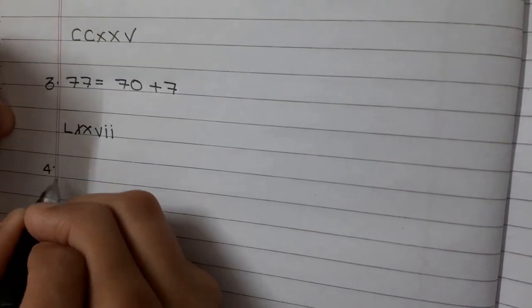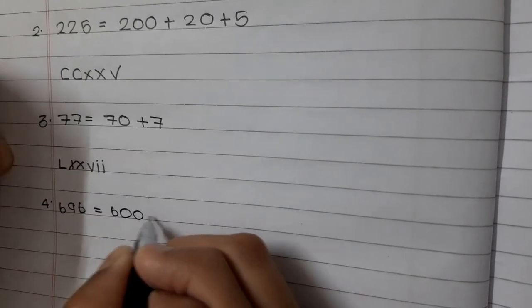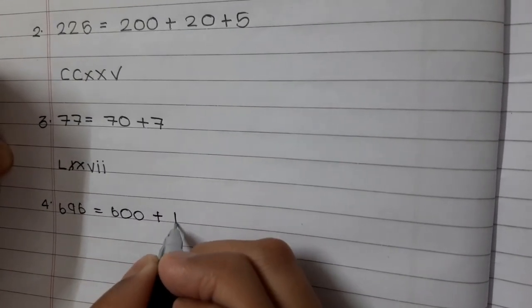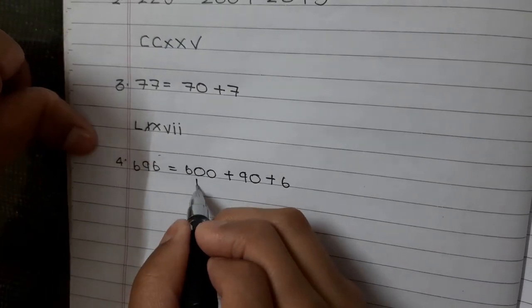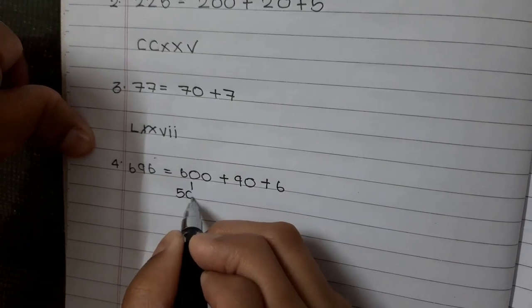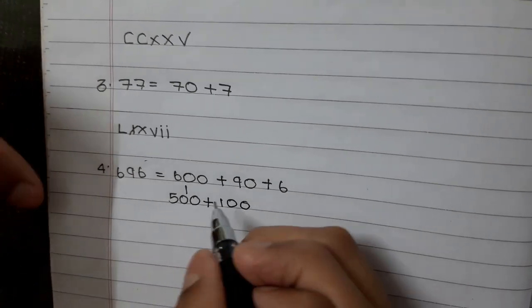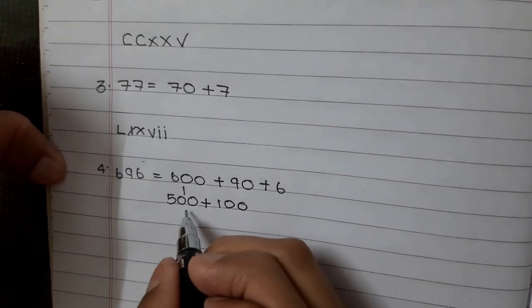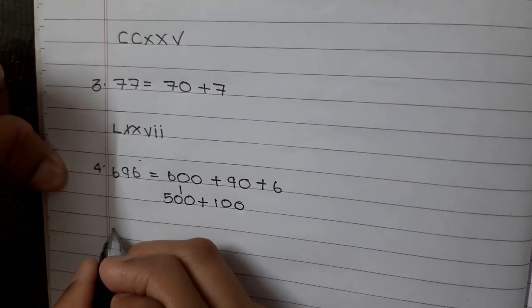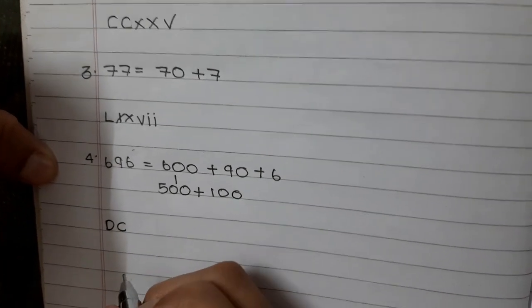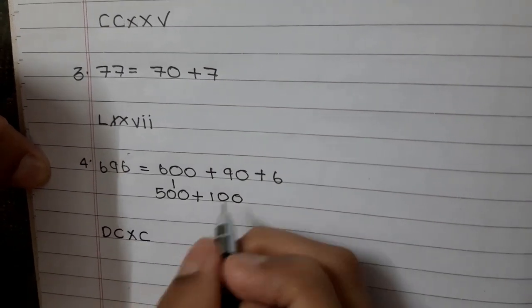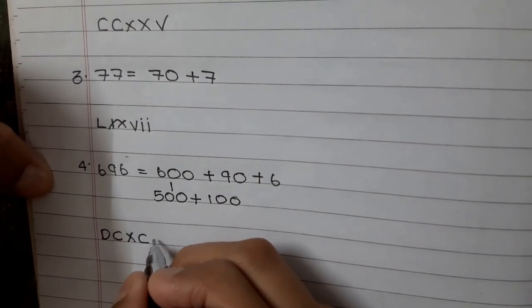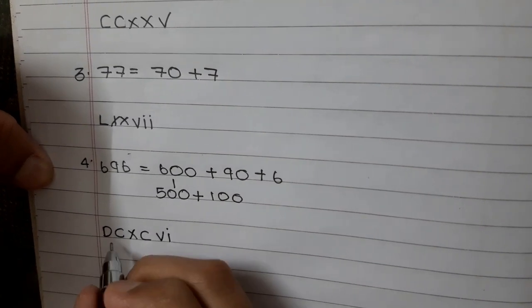Example 4: 696 equals 600 plus 90 plus 6. 500 is D, 100 is C, so 600 is DC. 90 is XC. 6 is VI.